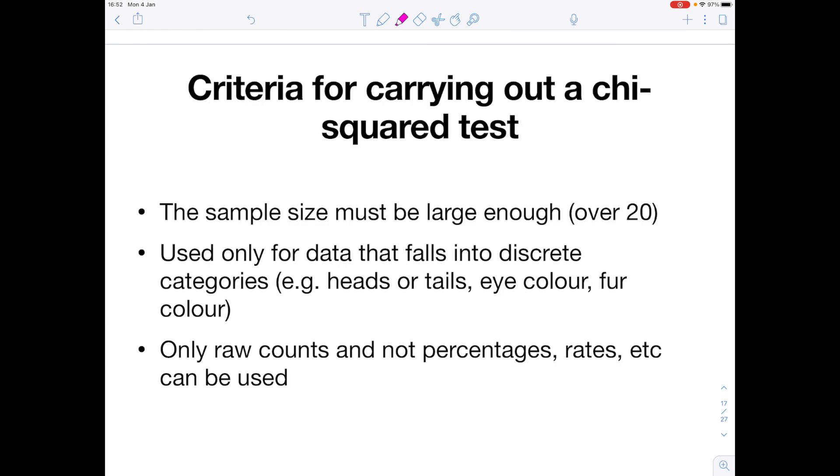So our criteria for carrying out a chi-squared test: firstly, the sample size must be large, so it must be over 20. It must be used for data that falls into discrete categories, so discontinuous data such as heads or tails, eye colour, fur colour. And only raw counts must be used, not percentages or rates.